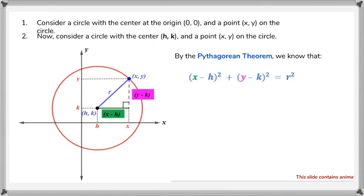Starting here, this is just kind of an explanation of how the circle's equation came to be. If you have a circle with its center at the origin, and a point xy on the circle, and then now consider a circle with its center hk and a point xy on the circle itself. By the Pythagorean theorem, we would have this equation right here to demonstrate the equation for any circle.